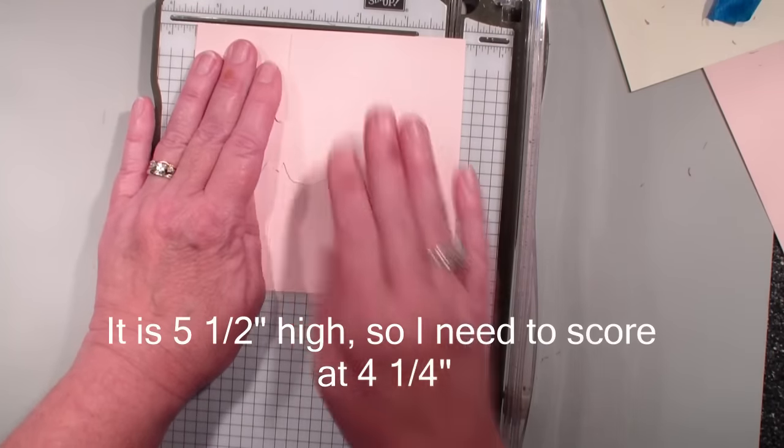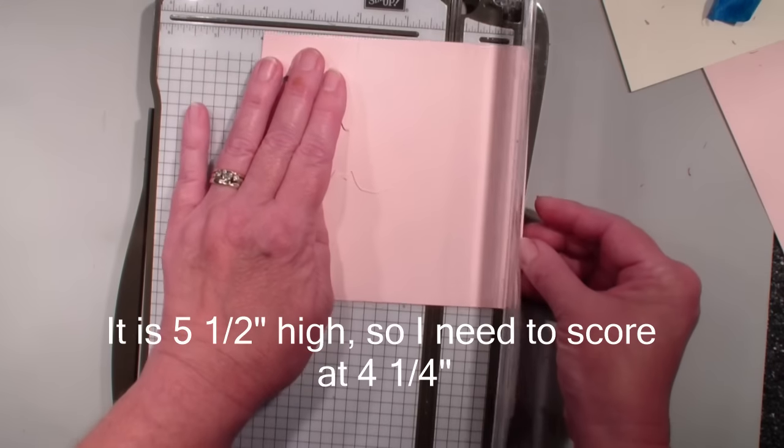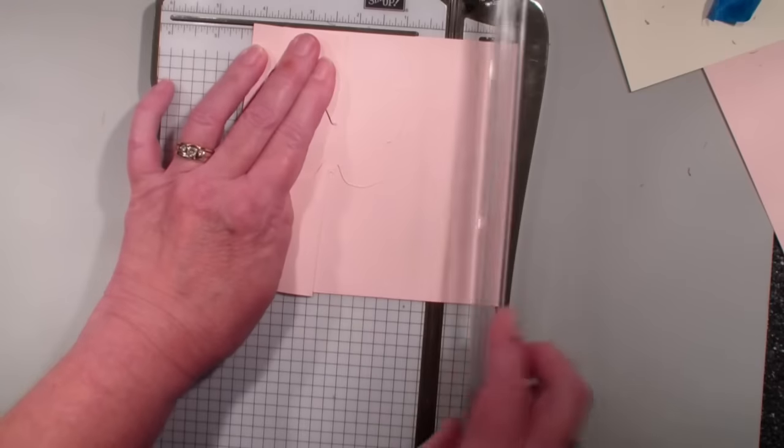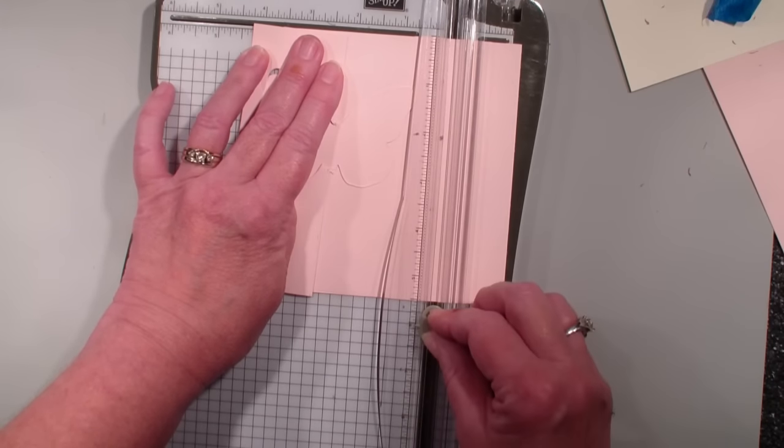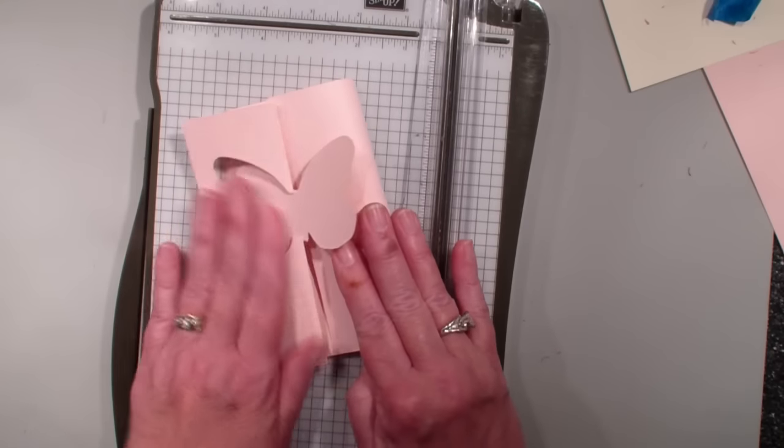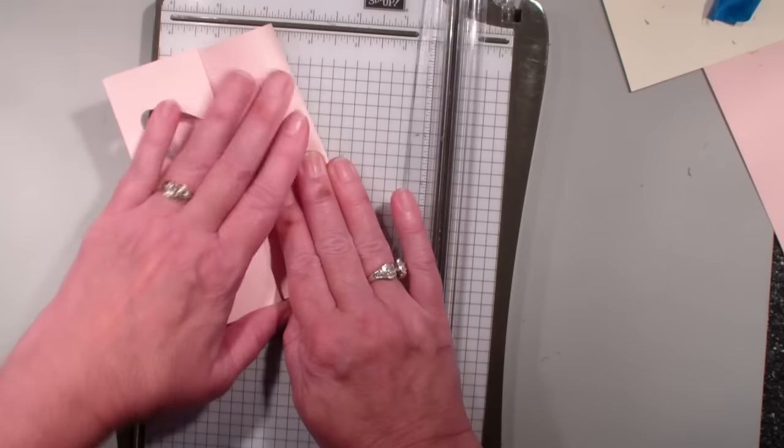So I have my flip here. I'm going to line that up at the 4 and a quarter because it's 5 and a half this way. And I'm going to score and that's going to give me my extra flip on my card there.